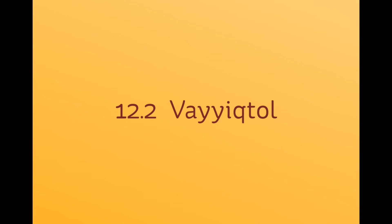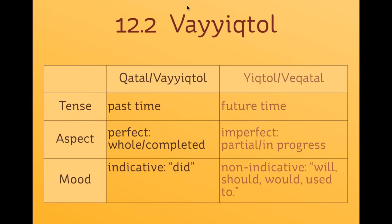Next, let's talk about the vayiktol conjugation. On the tense-aspect-mood chart we saw before with katal and yiktol, there are actually two more conjugations. Vayiktol corresponds exactly to katal, and vekatal corresponds exactly to yiktol — though we won't talk about vekatal until next semester. Vayiktol has the same kind of meaning as katal, but where they differ is in their distribution. Usually when you have a story, a katal verb will start the story, and then the main line of the story is carried along by vayiktol forms.